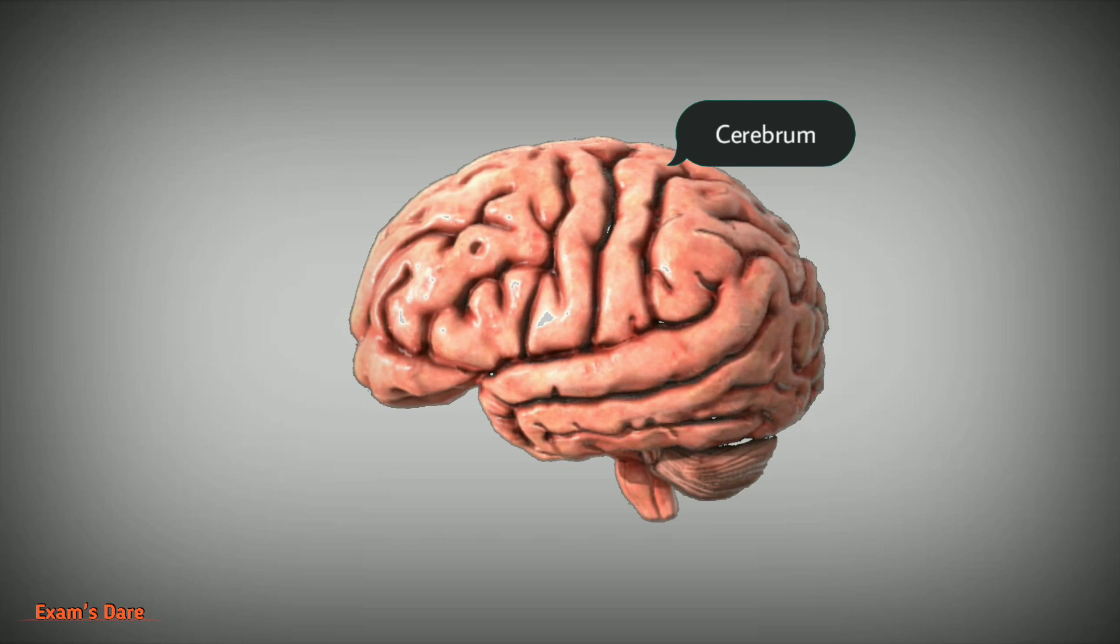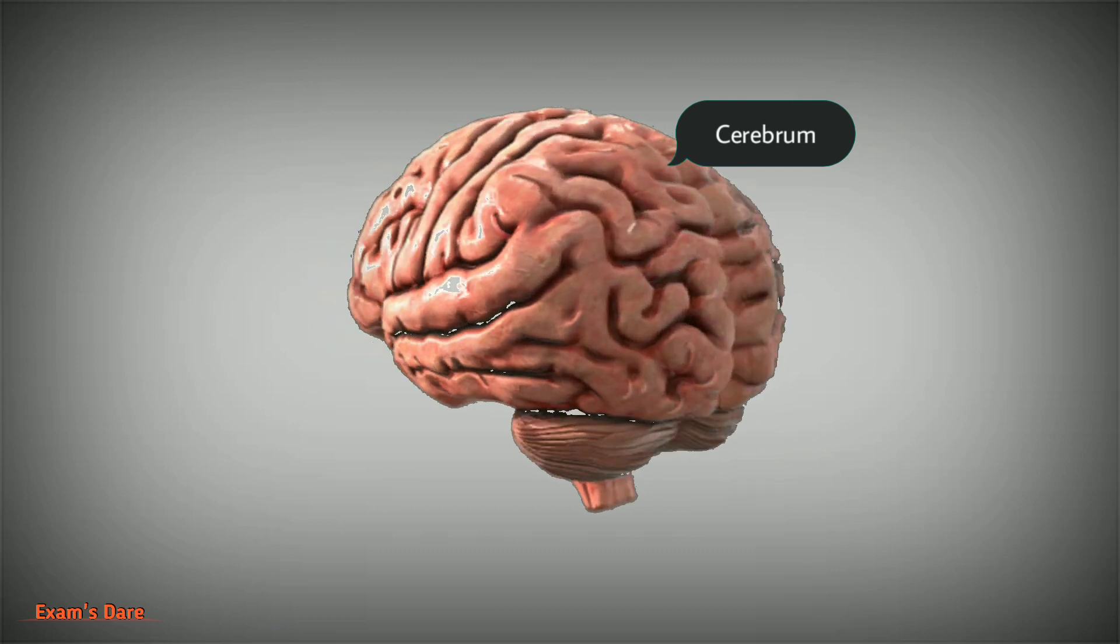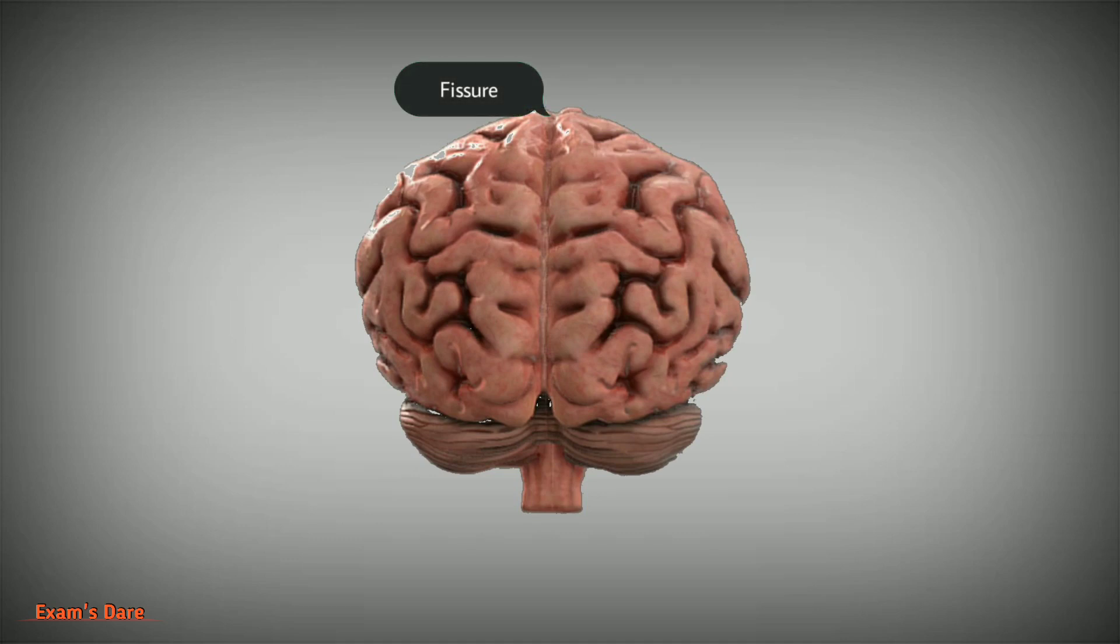The folds are called gyri and convolutions. The deepest grooves between the folds are called fissures. The shallow grooves between the folds are called sulci. The longitudinal fissure separates the cerebrum into right and left halves called cerebral hemispheres.